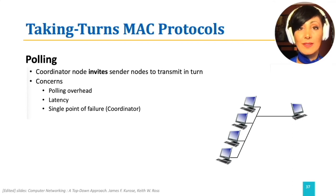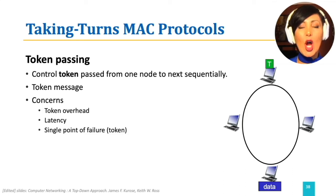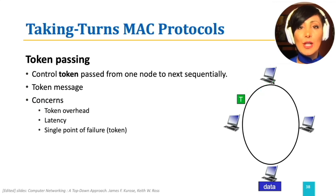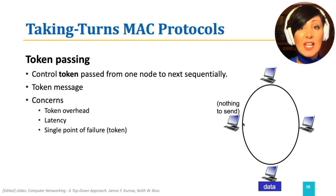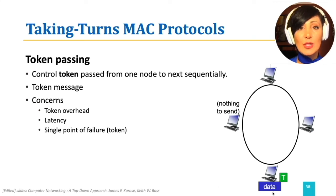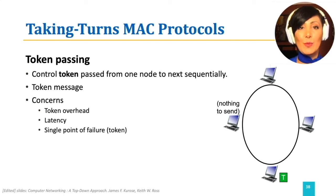Another class of taking turns protocols are token passing protocols. In token passing, a token which controls access to the channel is passed from one node to the next sequentially to allow the node to transmit. If a node does not have anything to send, it immediately passes the token to the next node. If a node has frames to transmit, it holds on to the token while it transmits up to a certain number of frames allowed by the token. Then it passes the token to the next node. The human analogy is like passing a microphone among speakers to signal their turn to speak.